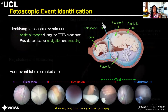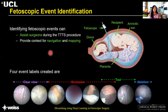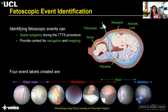Now let's move on to the final topic: fetoscopic event identification. This can assist surgeons during the TTTS procedure and can also help by providing context for navigation and mapping. By identifying placental views with a clear view, we know these are the views to feed to our mosaicing algorithms. When there is a view with heavy occlusions, none of the mosaicing or tracking methods will work, and neither the clinician nor our algorithms are interested in those views when the main goal is photocoagulating the vessels.